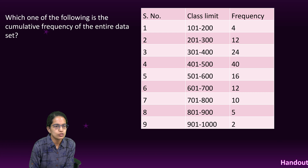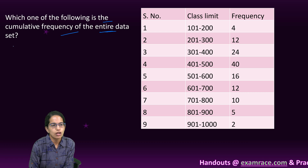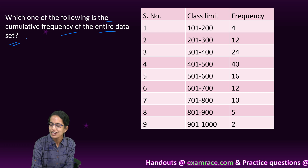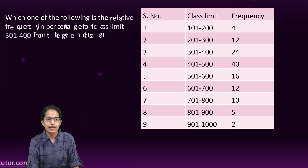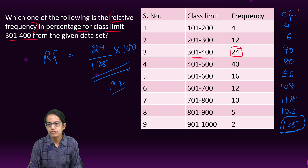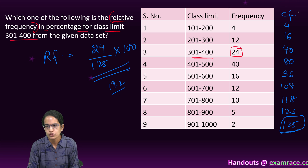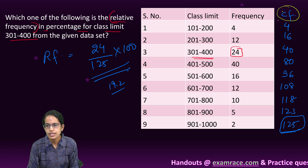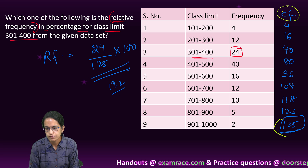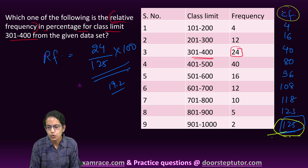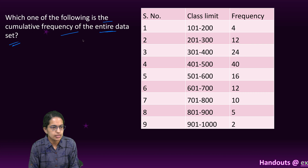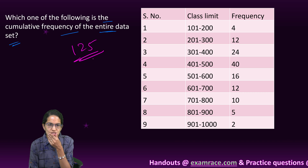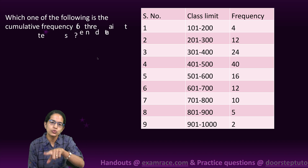For the next question — what is the cumulative frequency of the entire set — we already calculated this in the previous question. We just refer back to the cumulative frequencies computed earlier. The sum of all frequencies is 125, so the answer is directly 125.